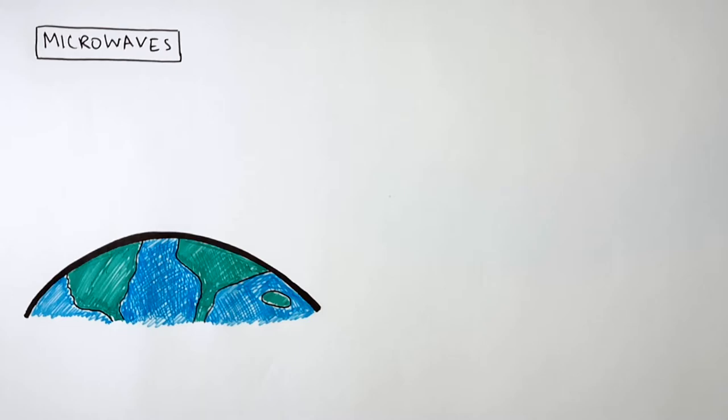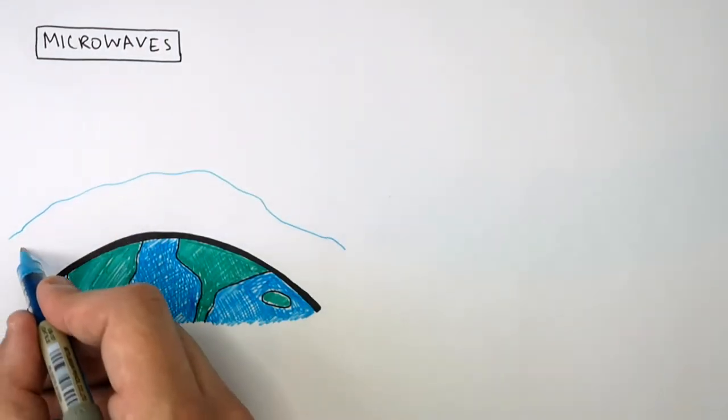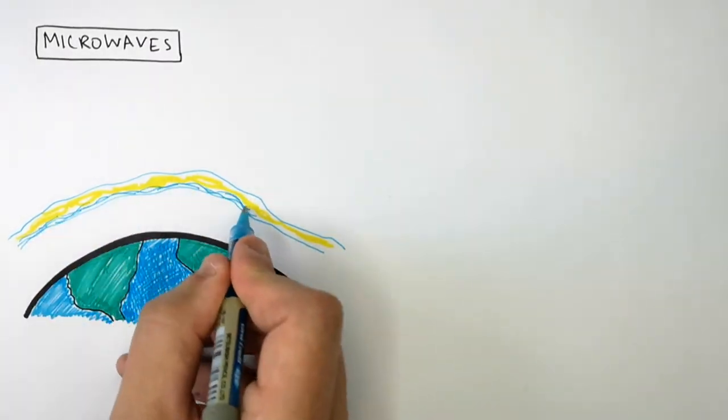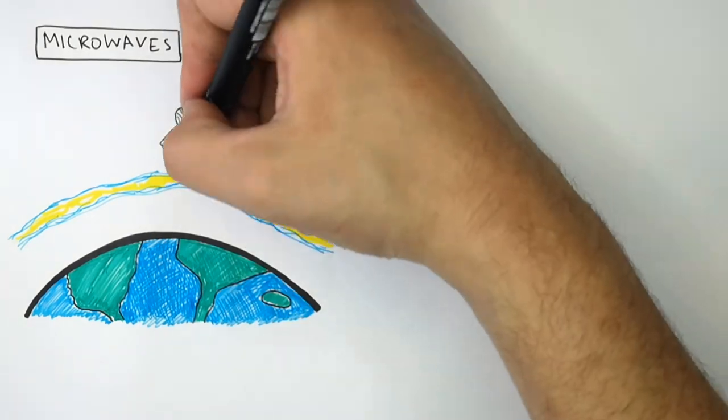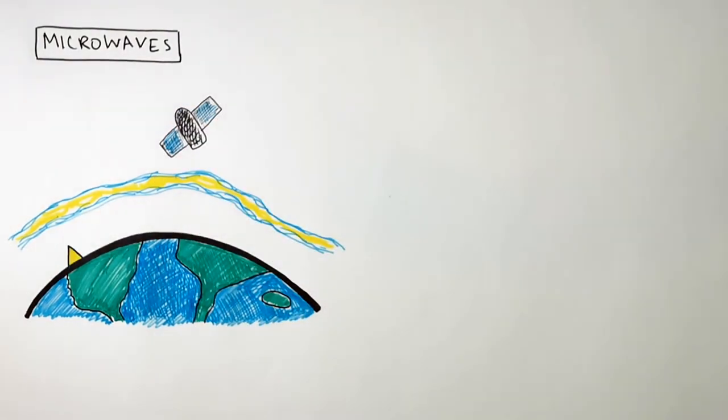Let's now see how microwaves are used in communications. So this here is the upper atmosphere of the Earth's atmosphere, and what I'm drawing now in space is a satellite. Microwaves use satellites to transmit microwave signals around the Earth.